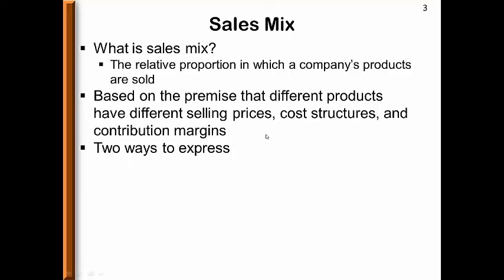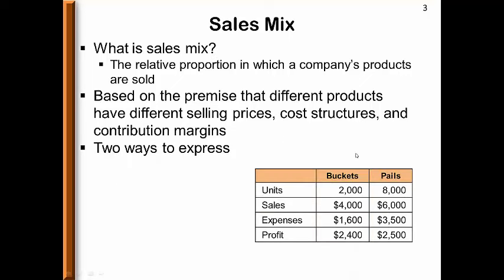There are two ways to express sales mix. Here is an example using buckets and pails. The first way is based on units — the unit sales mix. This company sells 2,000 buckets for every 8,000 pails. Reducing this to lowest terms tells us that for every bucket a company sells, it will sell four pails.